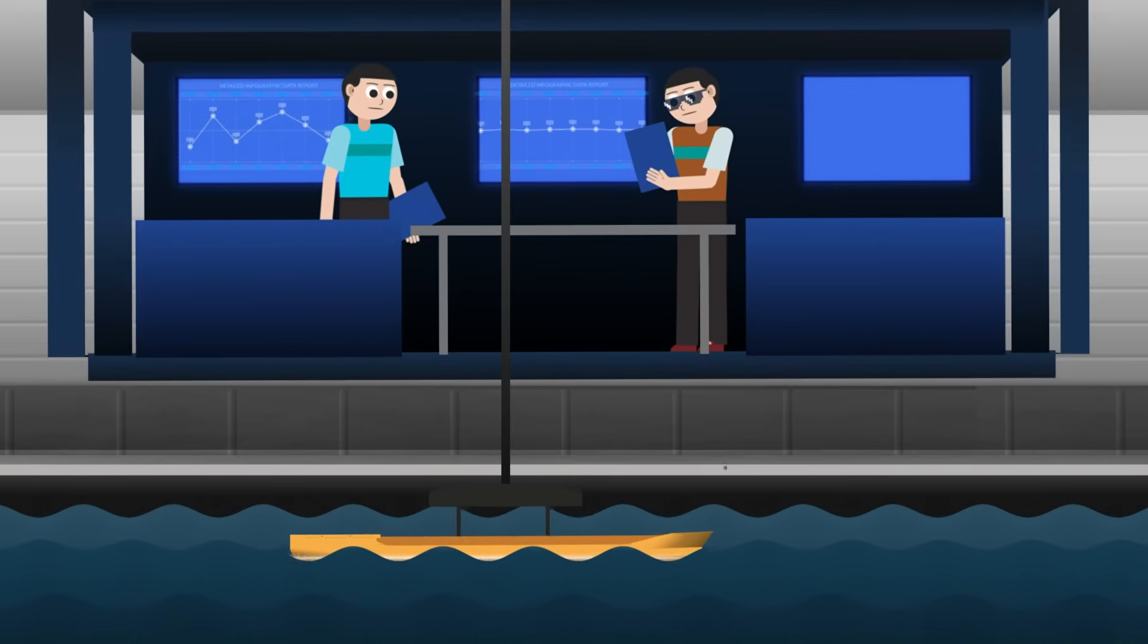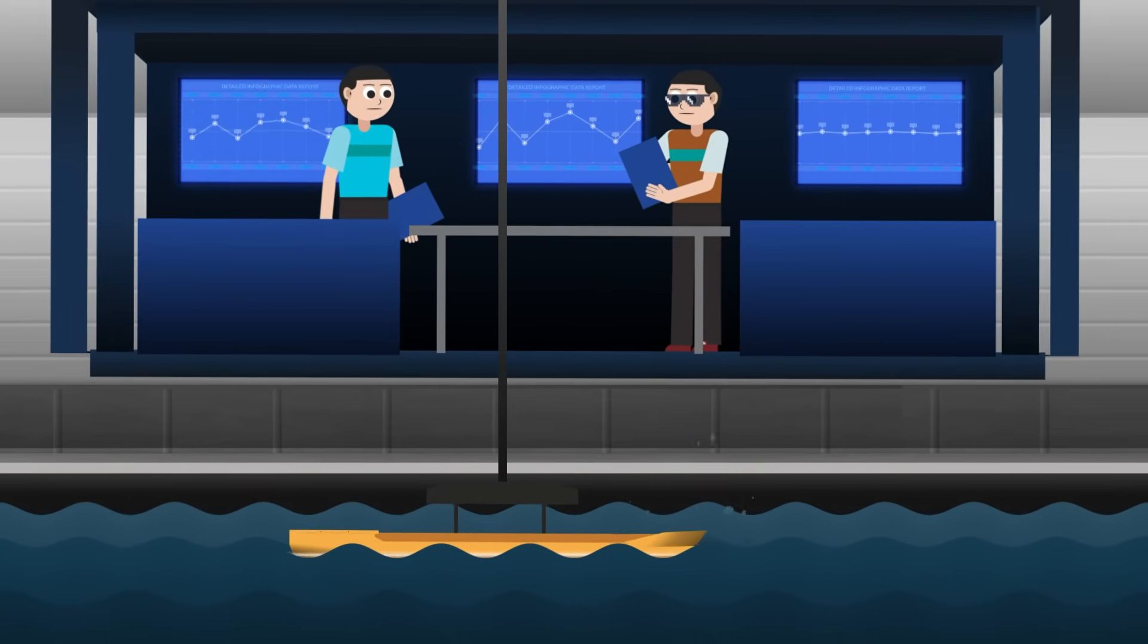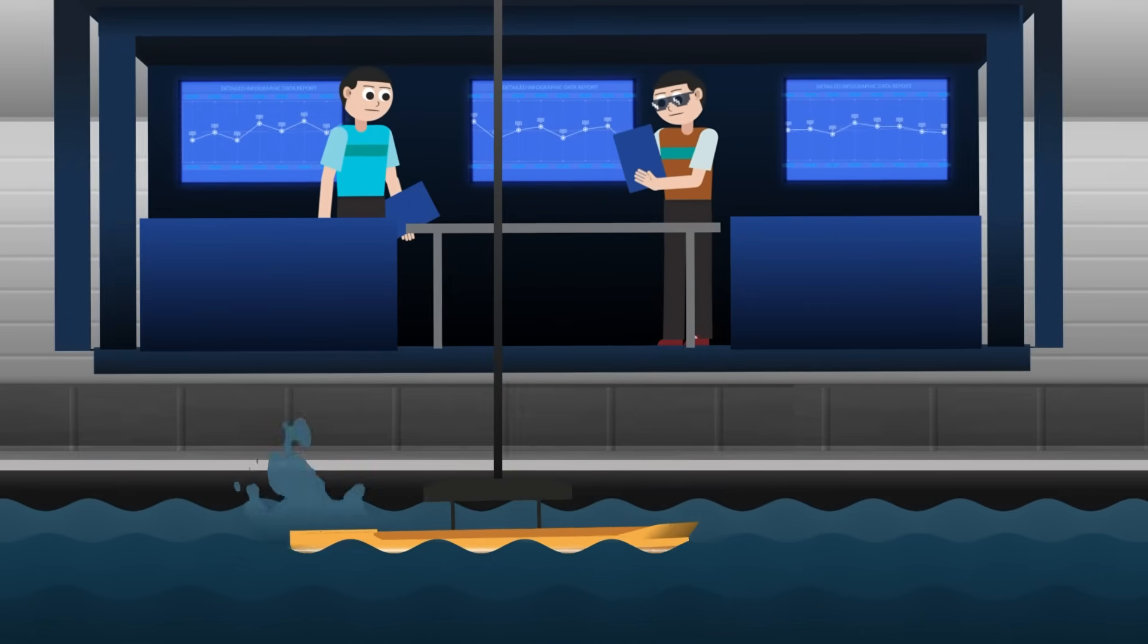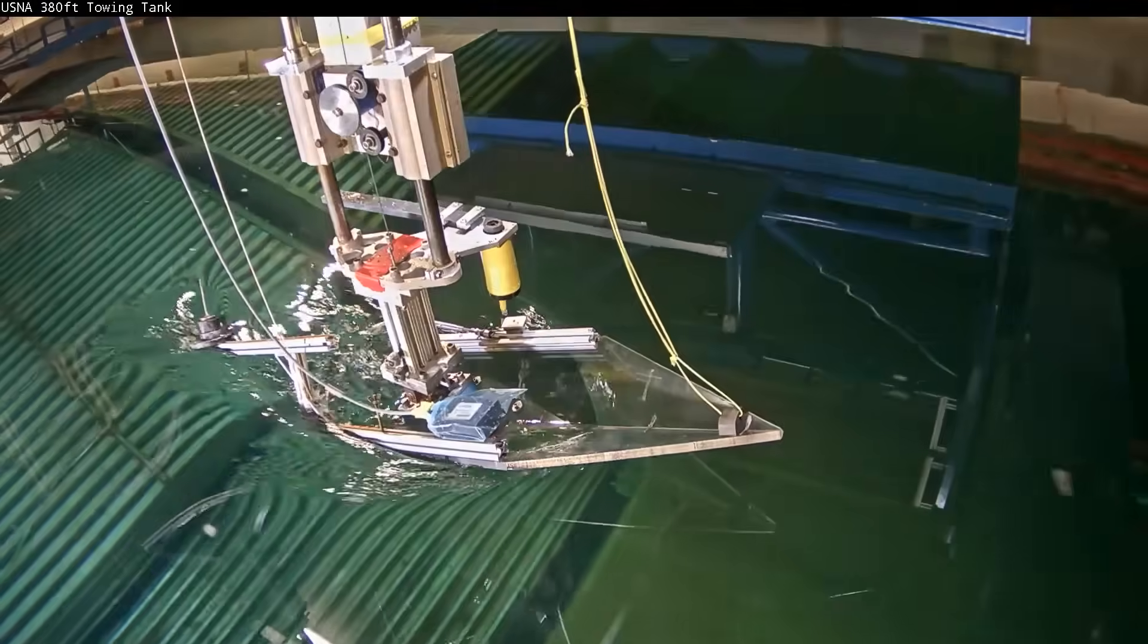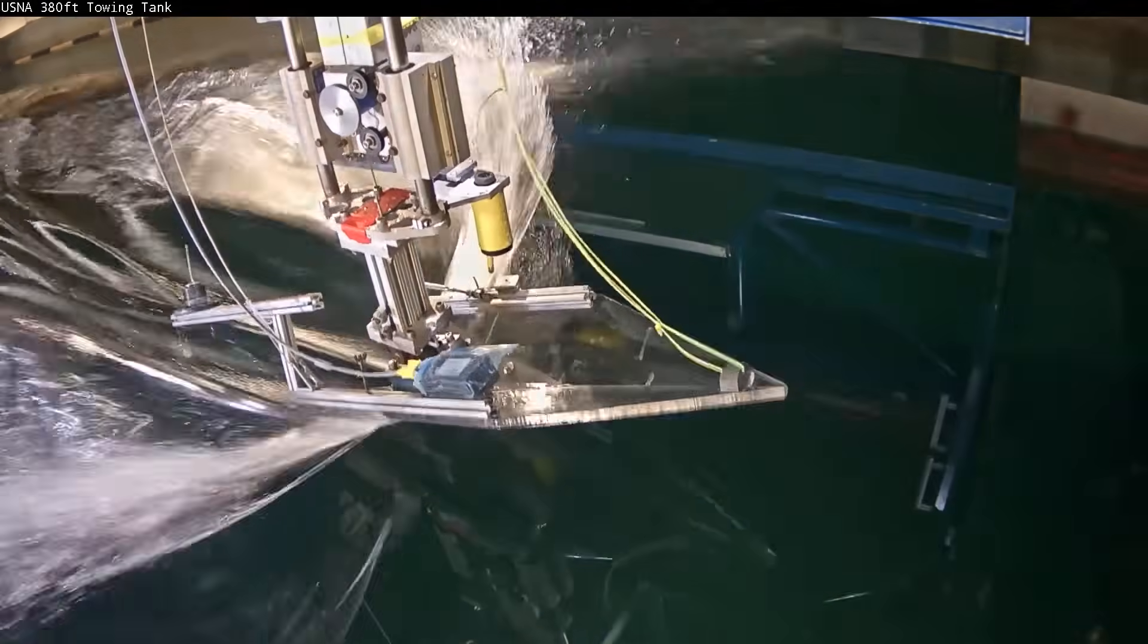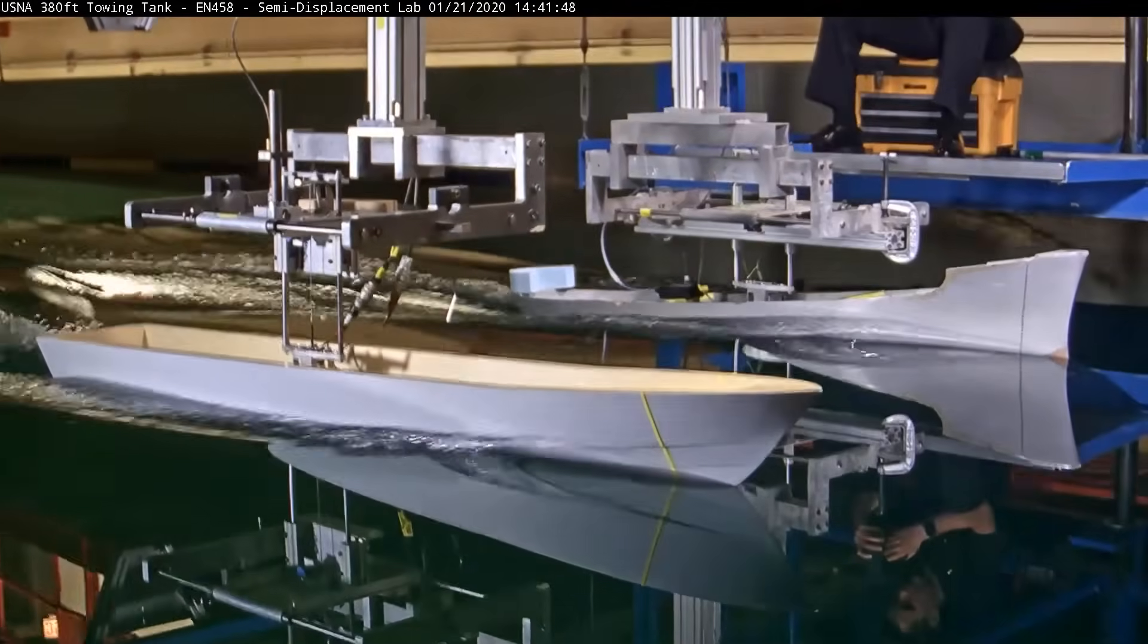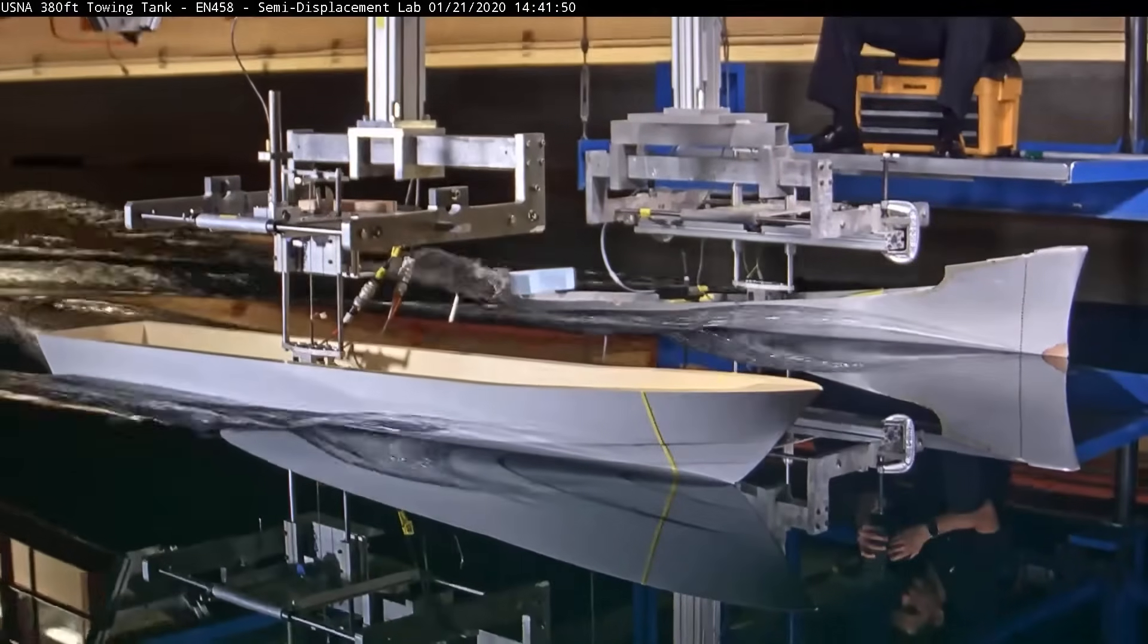Wave basin testing could have revealed that vulnerability. Engineers could have tested the hull in following seas, at different wave frequencies, watching for the exact conditions that trigger parametric roll. They could have adjusted the design, added dampening systems, or, at minimum, warned the operators which conditions to avoid.